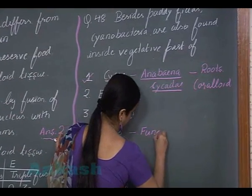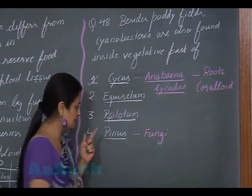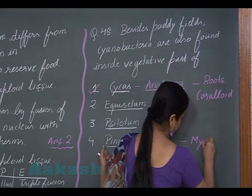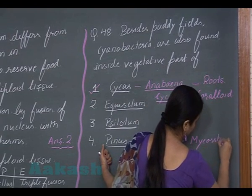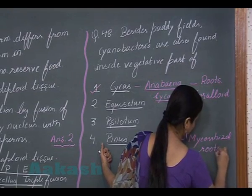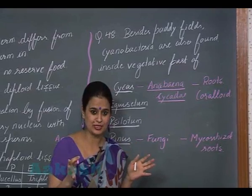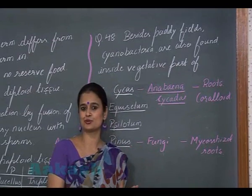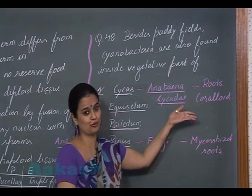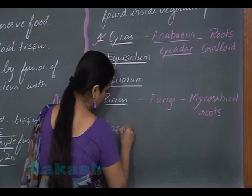In Pinus there is an association with fungi, and the fungal-associated roots are known as mycorrhizal roots. So Pinus has mycorrhizal roots, while Cycas shows association with cyanobacteria and such roots are called coralloid roots. The answer for question 48 is option 1.